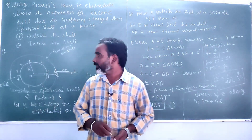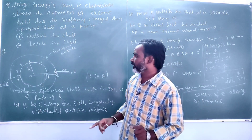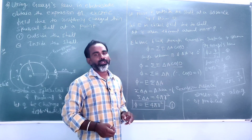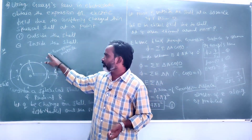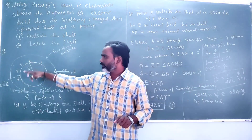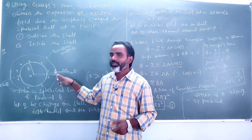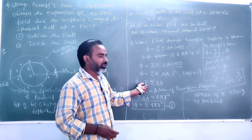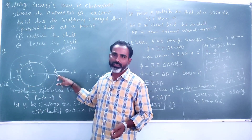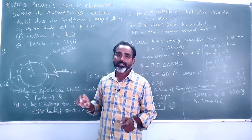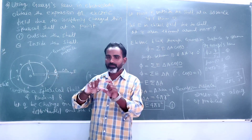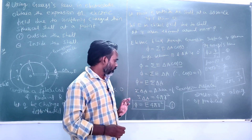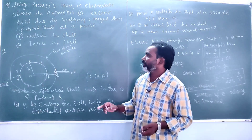The direction of E is along OP, radially outward. This is the result for a point outside the shell. We know the formula Σ E·δA·cos θ, and we take E outside the summation because E is the same everywhere on this Gaussian surface — the distance from center O to any point on the surface is always r.